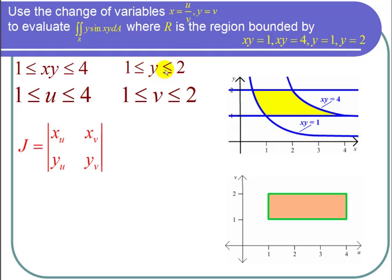So the partial derivative x sub u is just 1 over v, x sub v is negative u over v squared, y sub u, there are no u's here so that's 0, and y sub v is just 1. So now I take the determinant. I take 1 over v times 1 minus negative u over v squared times 0. That's 1 over v minus 0, which is just 1 over v.